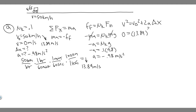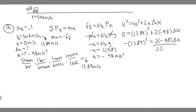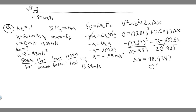So we have 0 equals 13.89 squared plus 2 times (minus 0.98) times delta x. Moving terms over: minus 13.89 squared equals 2 times minus 0.98 times delta x. Dividing both sides to isolate delta x: delta x equals minus 13.89 squared divided by 2 times minus 0.98. The minus signs cancel, and when you compute that, delta x equals 98.4 meters. This is the maximum acceleration from kinetic friction, giving us the minimum stopping distance.